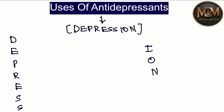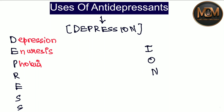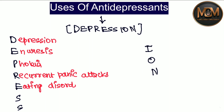From D we have Depression. From E we have Enuresis. From P it's Phobia. From R we have Recurrent panic attacks. From E we have Eating disorder, like bulimia. From the first S we have Stress disorder.